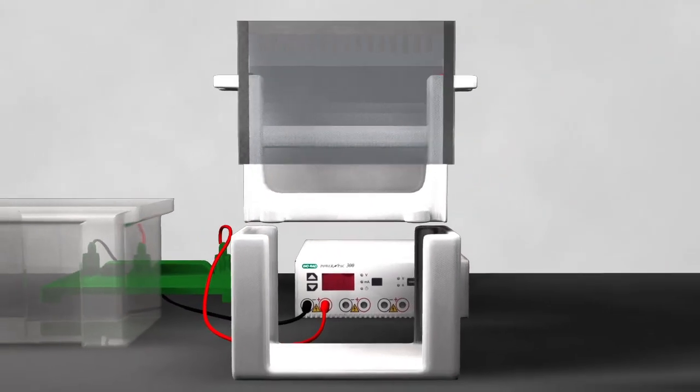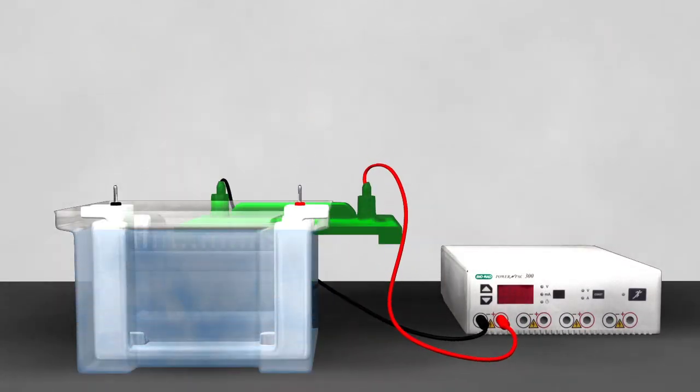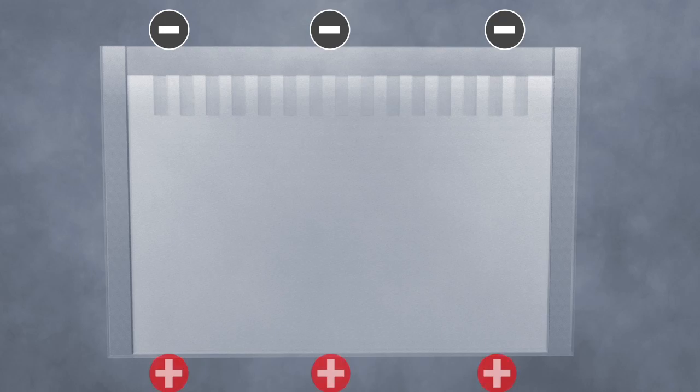Once the gel completely polymerizes, the gel cassette is inserted into a chamber, which contains buffer to allow the conduction of current through the gel, with a negative electrode positioned at the top of the gel chamber and the positive electrode positioned at the bottom of the chamber.